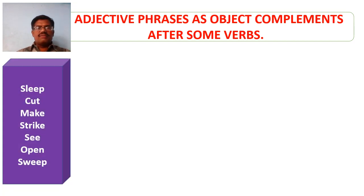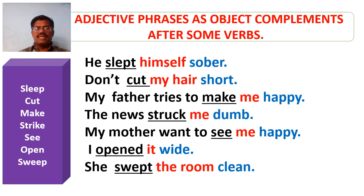Here are some more adjective phrases used as object complements after certain verbs. The verbs include: sleep, cut, make, strike, see, open, sweep. These verbs are used in sentences, underlined, and the adjective phrases used as object complements are marked in blue ink. The objects are marked in red ink.